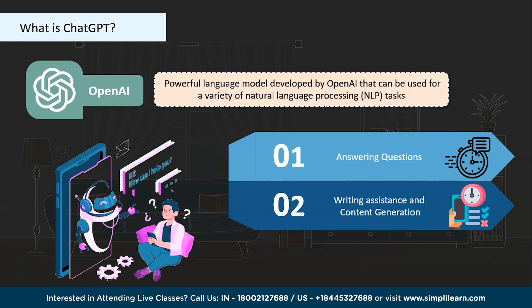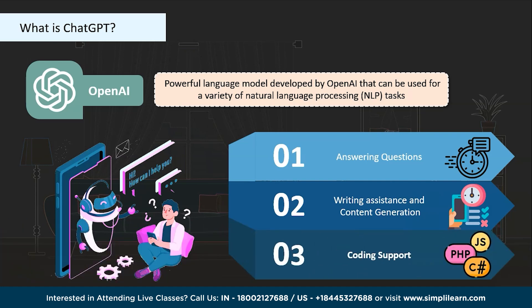ChatGPT also offers writing assistance and content generation. It can generate text in various styles such as news articles, product descriptions, and social media posts. It can provide suggestions and help with creative writing tasks, generate ideas, offer writing prompts, assist with storytelling, or provide feedback on written content. Finally, it offers coding support — it can help programmers by generating code snippets, explaining programming concepts, or providing guidance on coding-related issues.